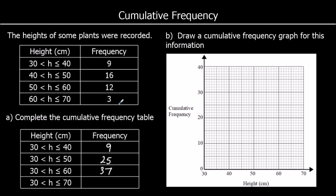And then finally add on the 3. So there are 40 plants in total — 40 plants between 30 and 70 centimetres. That's all of the plants.